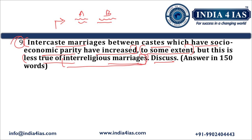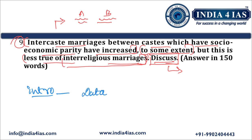In the first part, we answer why there is a growing trend of inter-caste marriages between socio-economically equal castes. In the second part, we discuss why it is not true for inter-religious marriages. The directive word is 'discuss', so we address multi-dimensional aspects. For the introduction, we should quote data on inter-caste marriages from agencies like the India Human Development Survey conducted by the National Council for Applied Economic Research and the University of Maryland.